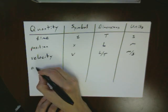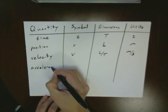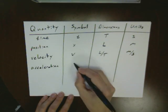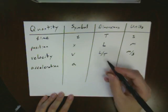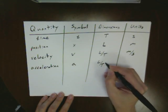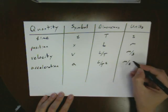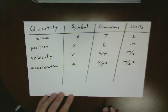Now, our acceleration, given a symbol A, was a length per time squared, with a standard unit of meters per second squared.